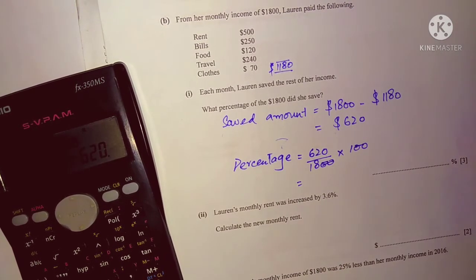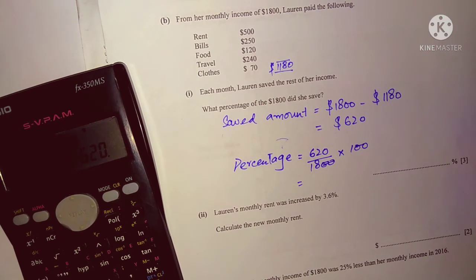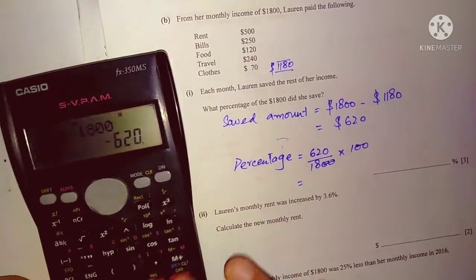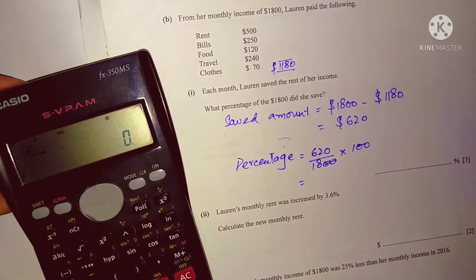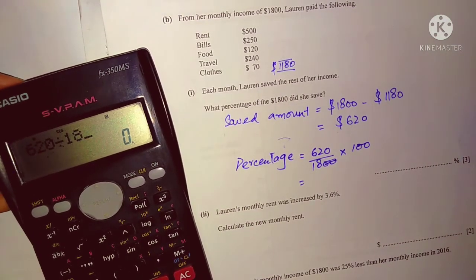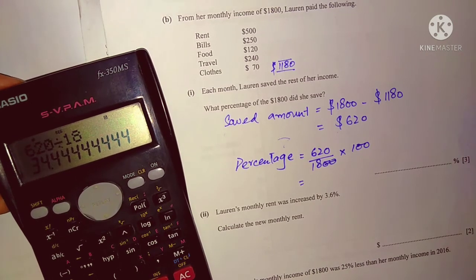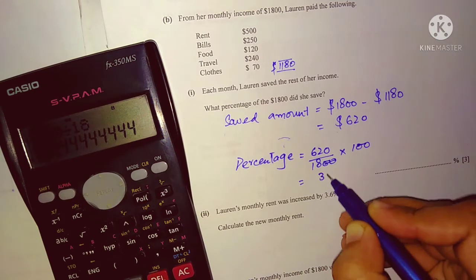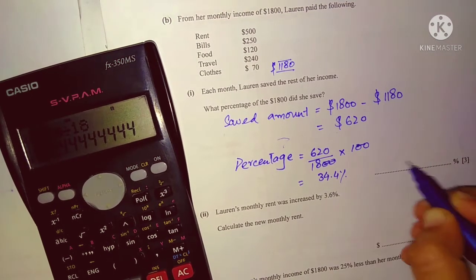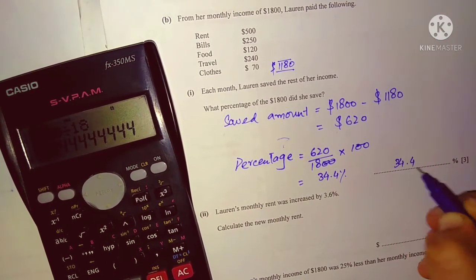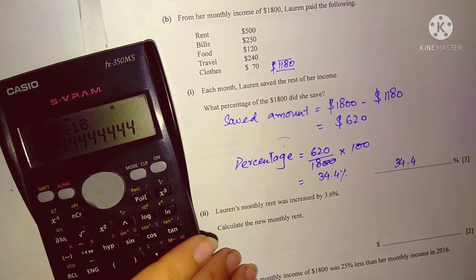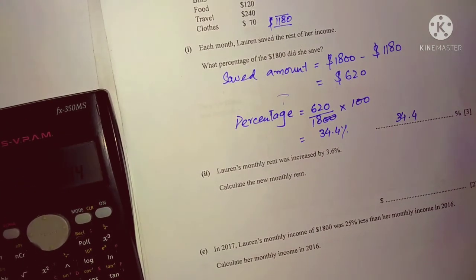You can cancel two zeros from each side, so divide 620 by 18. 620 ÷ 18 = 34.4. So Lauren saved 34.4% of her income. This is the percentage of the saved amount.